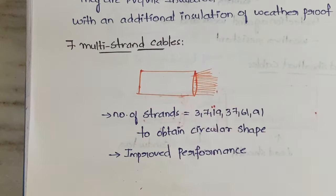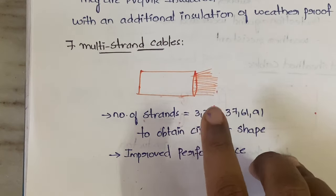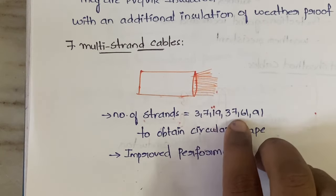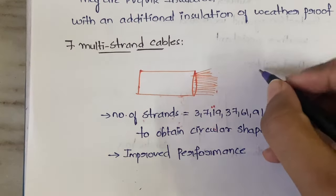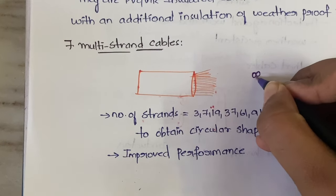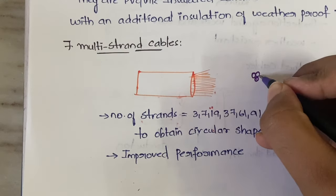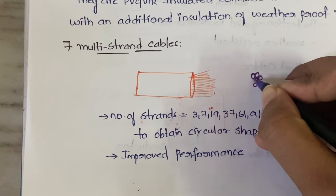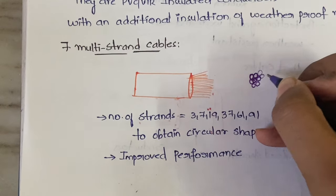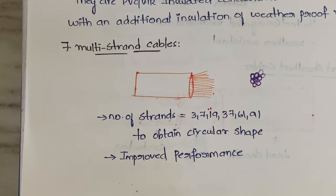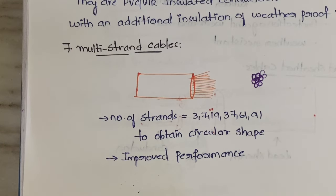The seventh type is multi-strand cable. In a multi-strand cable you will have multiple strands inside a single coating. These strands must be in fixed numbers — like 3, 7, 19, 37, 61, or 91 — because the goal is to obtain a circular shape. For example, 7 strands means 1 in the center and 6 around it. Following fixed numbers maintains the circular shape.